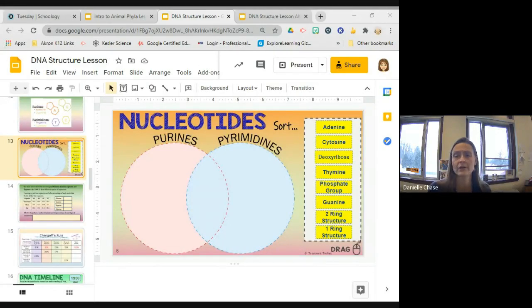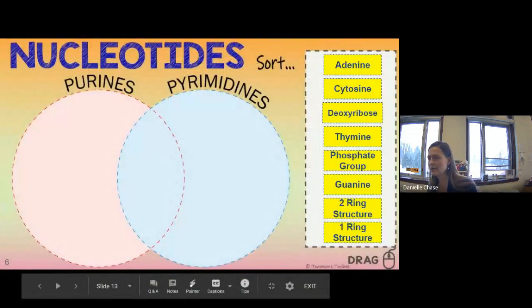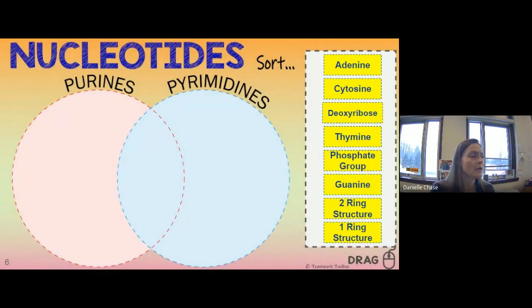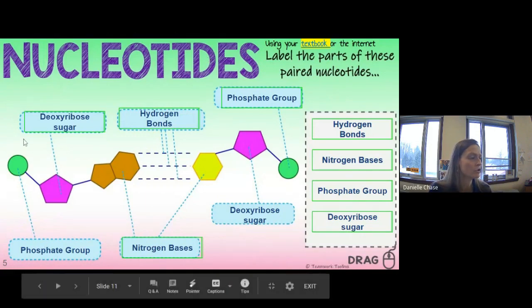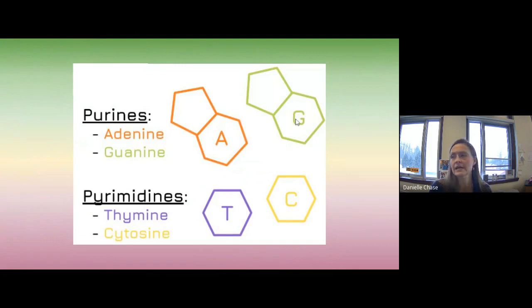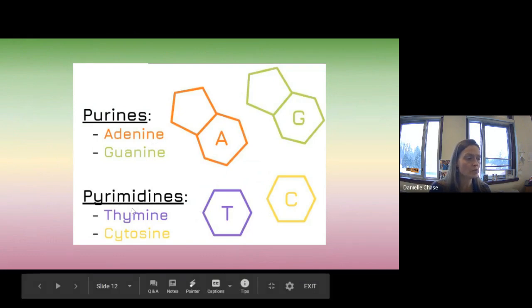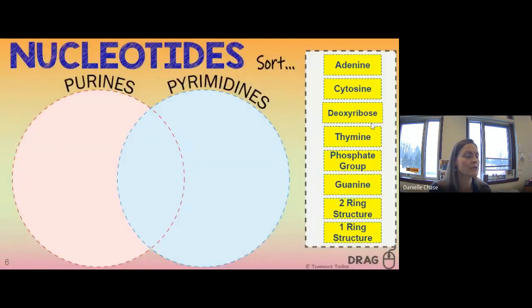We're starting with slide 13, which you hopefully worked through yesterday. It was based on the nucleotide slide showing that a nucleotide is made of a sugar, a phosphate, and a nitrogen base, and where the hydrogen bonds are. The next slide showed that purines — adenine and guanine — have two rings, while pyrimidines — thymine and cytosine — have just one ring. Based on that, we should have been able to complete the compare-contrast about purines and pyrimidines.